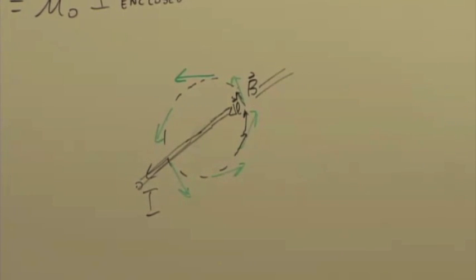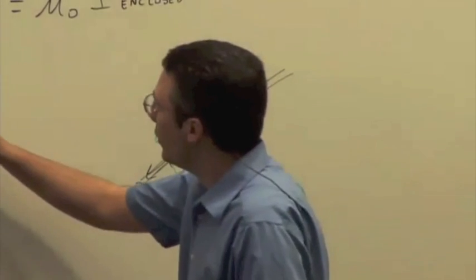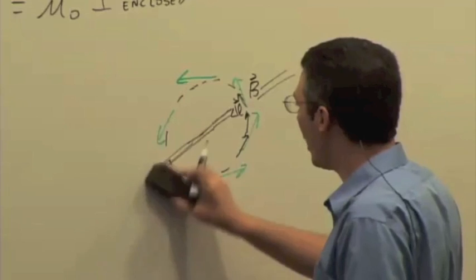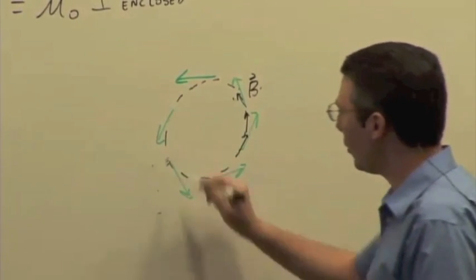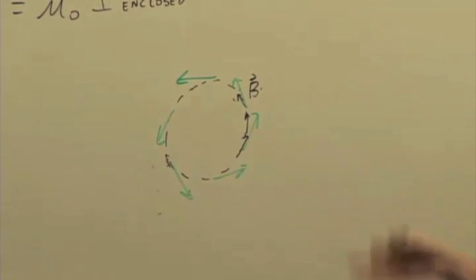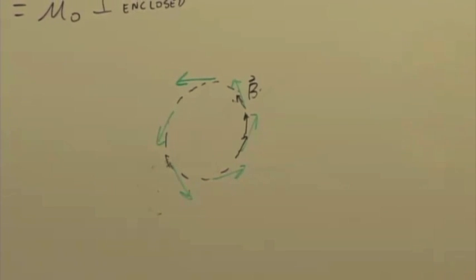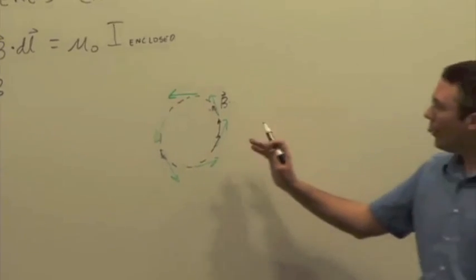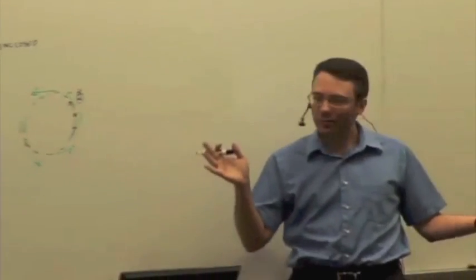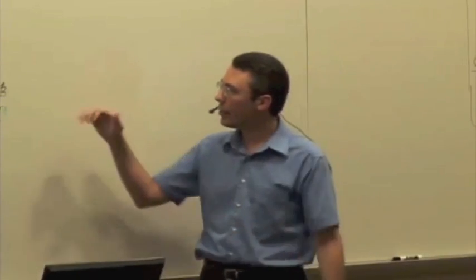There's a directional issue here which we didn't mention last time. If you choose a path that's counterclockwise, for example, and the path integral is something that the direction you can choose yourself. If you choose a direction that's counterclockwise and you get a positive number, what's that telling you about the direction of the conventional current? Well, it's actually another right-hand rule to govern the directionality here.